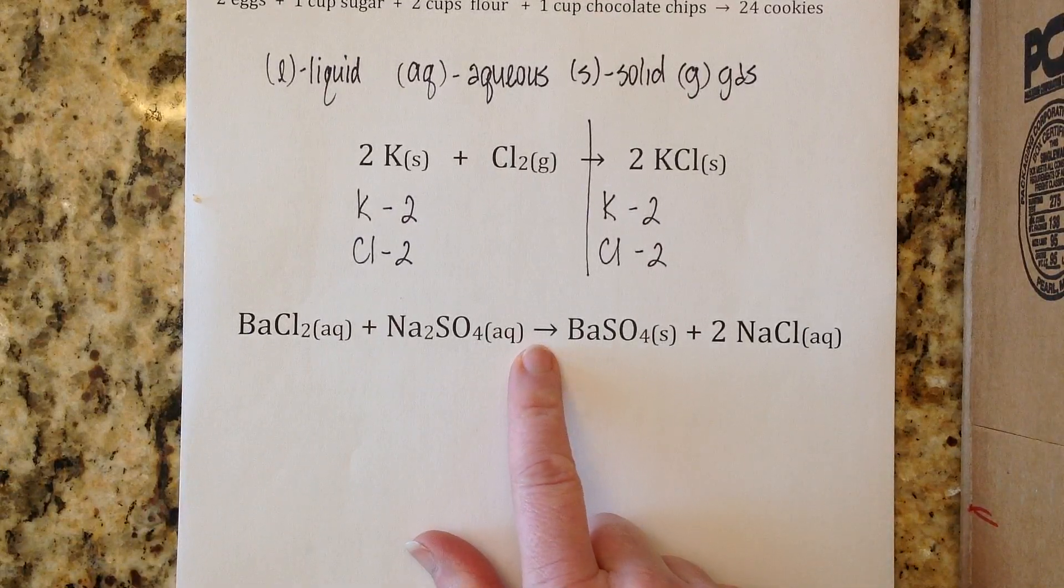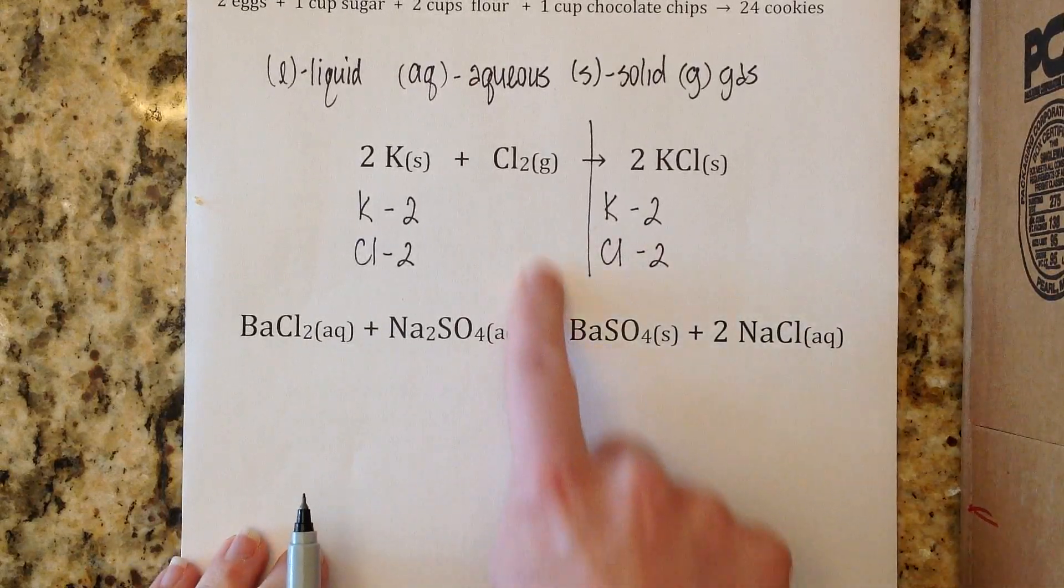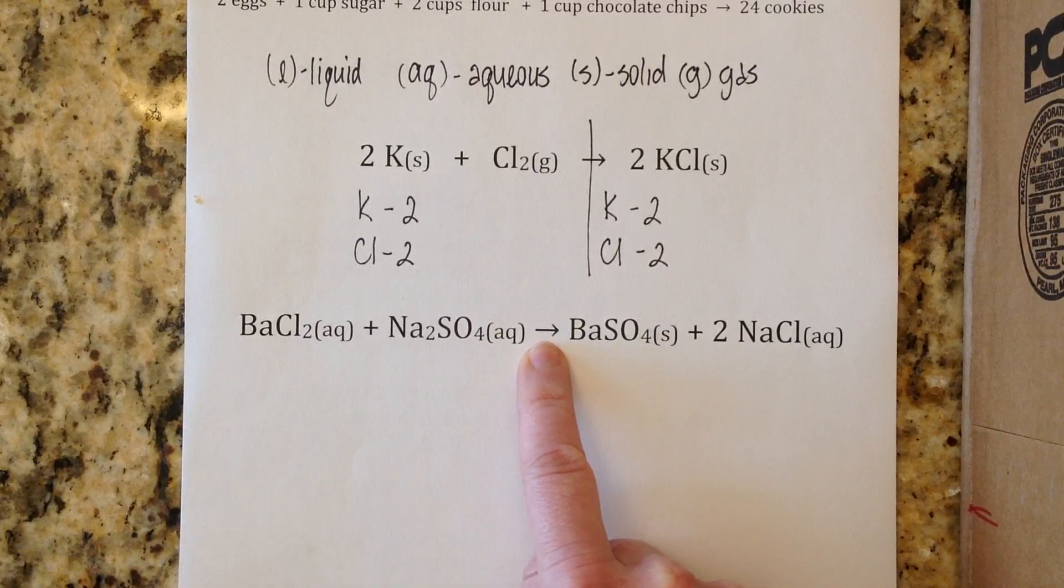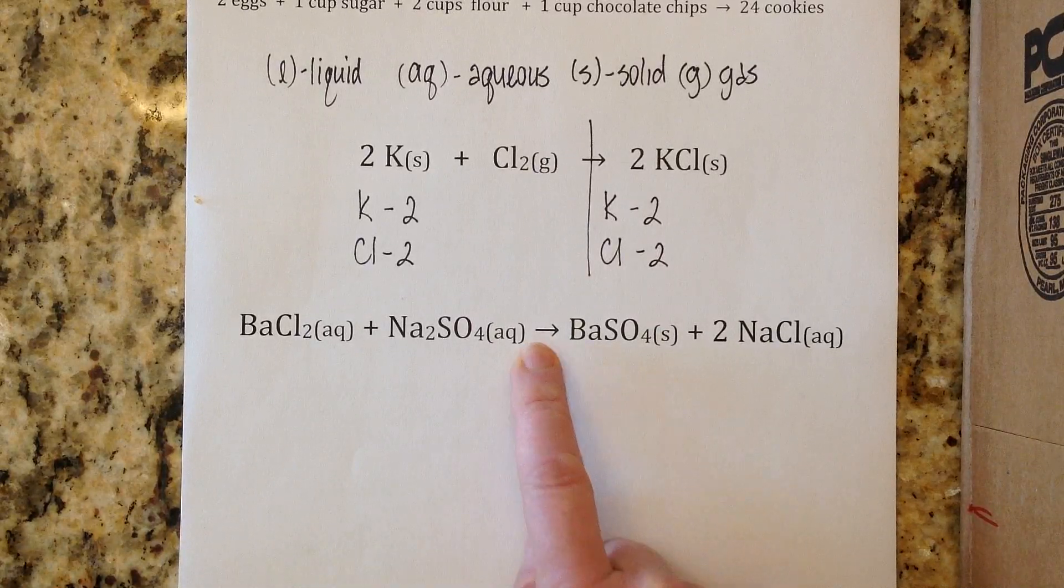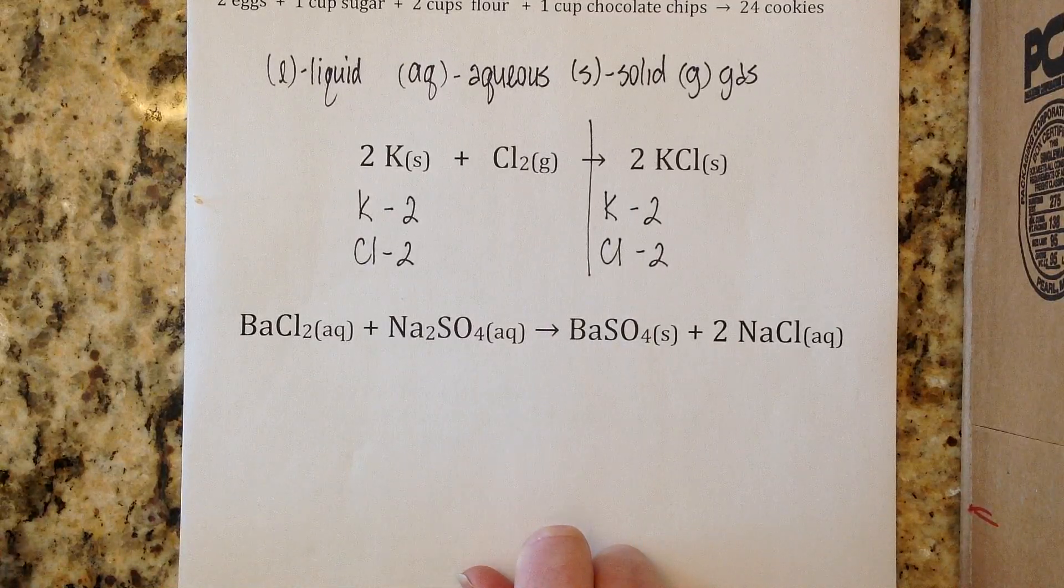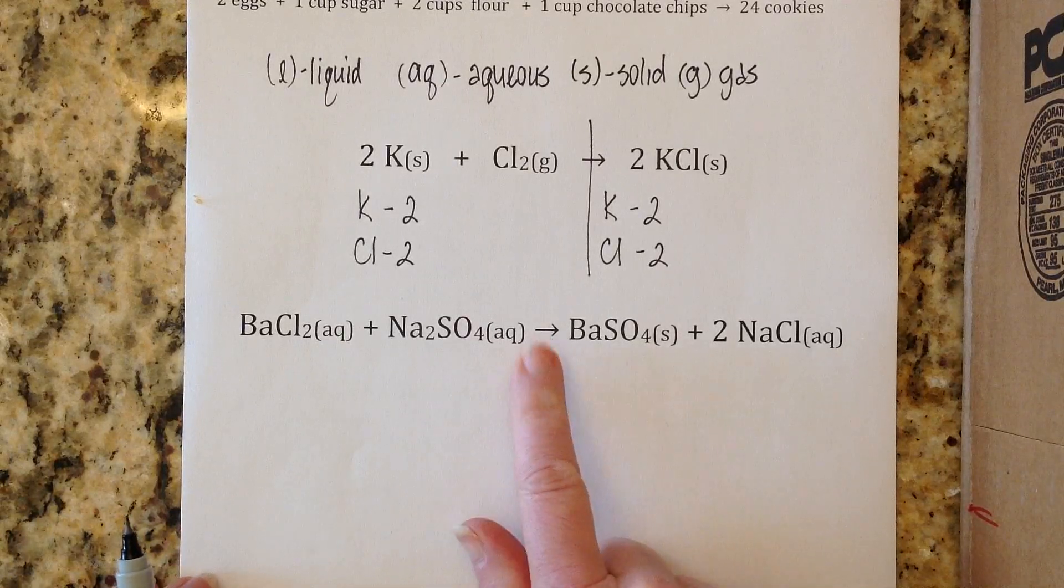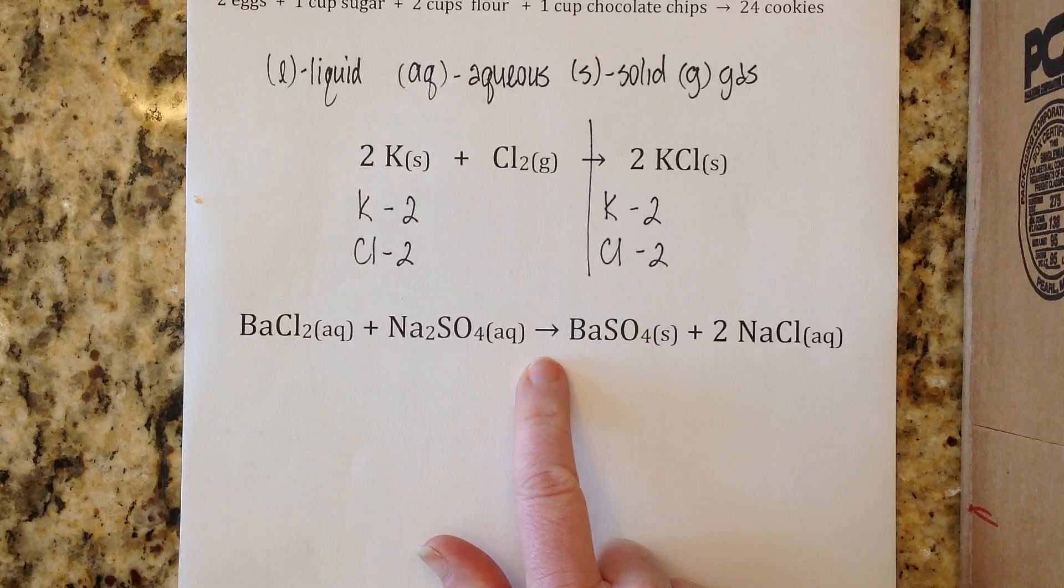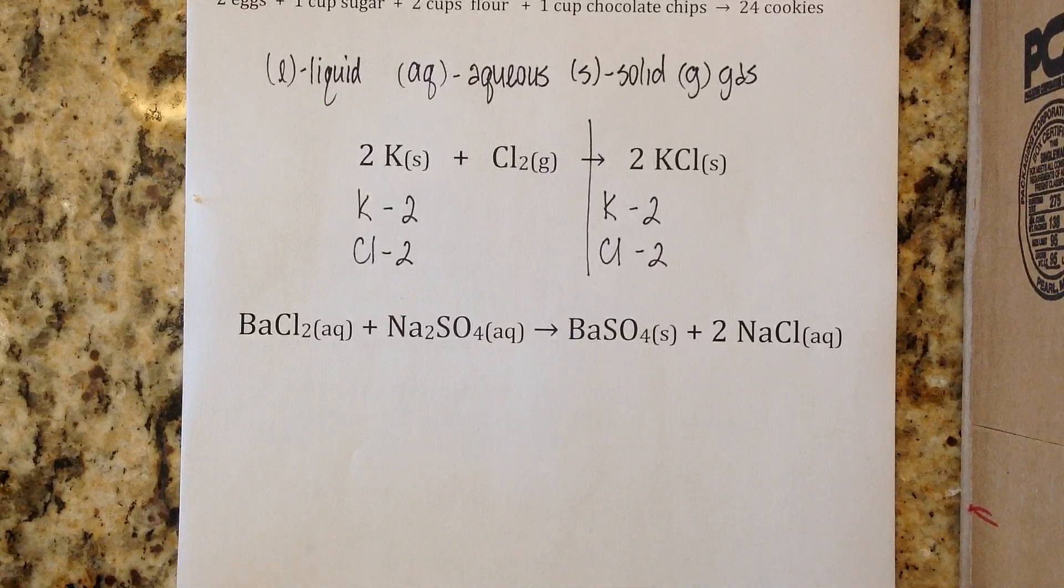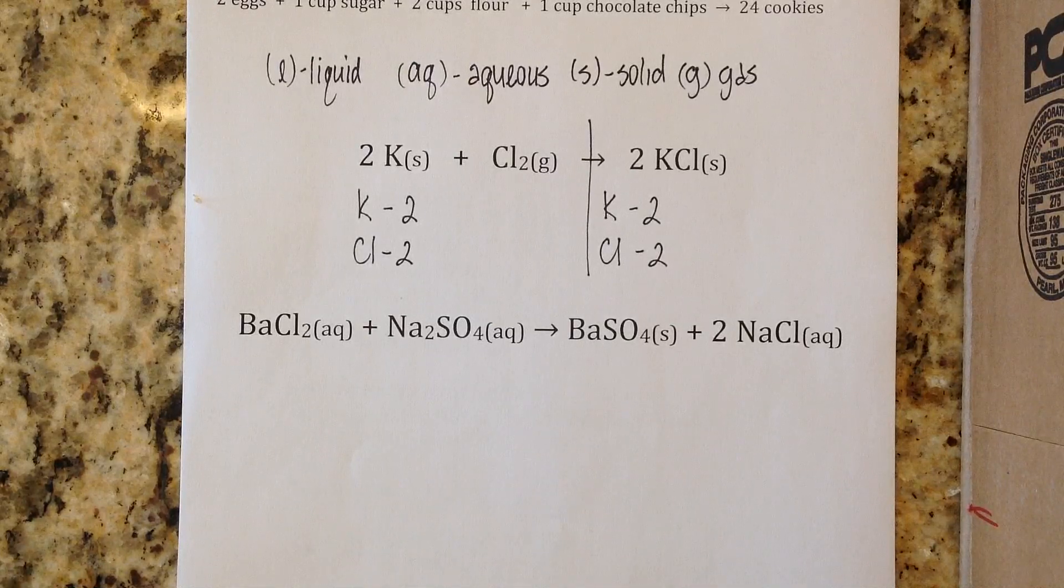Sometimes over the arrow you may even have some special instructions. You may have a temperature, they may be saying this is occurring at 400 kelvin, or there might be a little triangle indicating that you're adding heat. There may be a pressure, or some additional information written over that arrow. Just like when you are cooking, you may need to know what temperature the oven should be at.